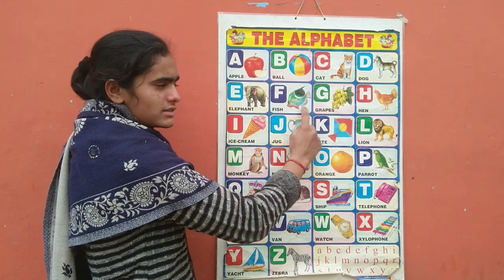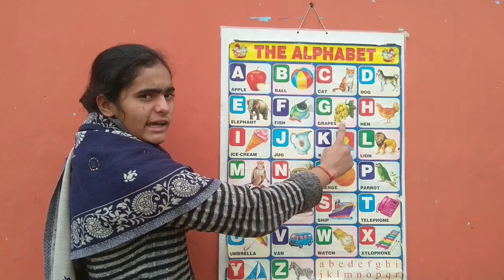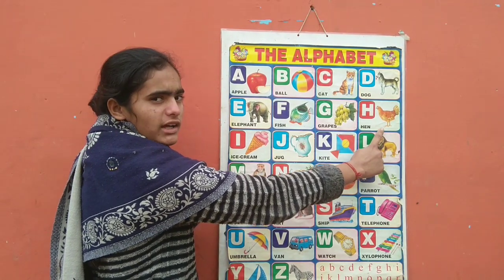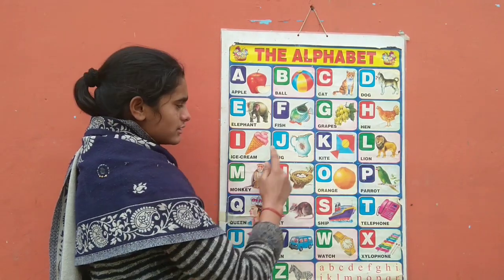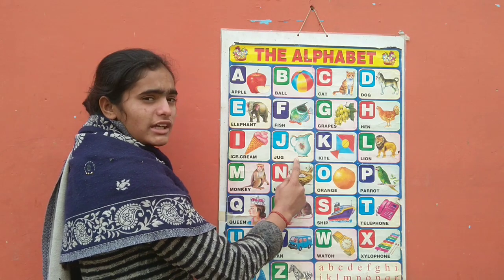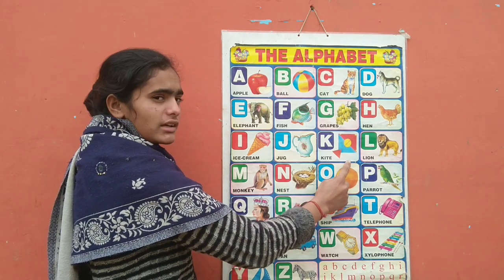F for fish, G for grab, H for hand, I for ice cream, J for jump.